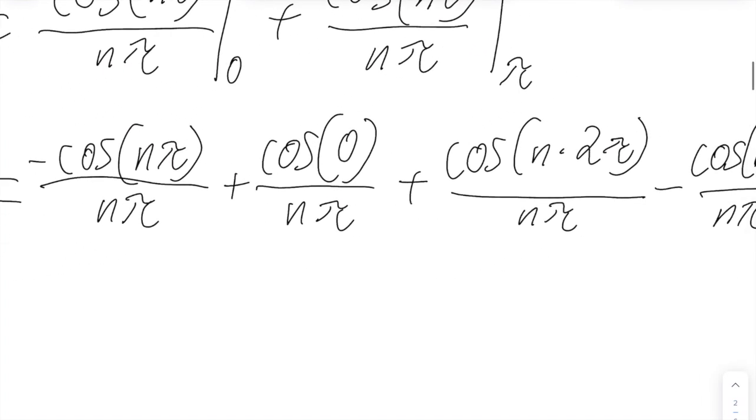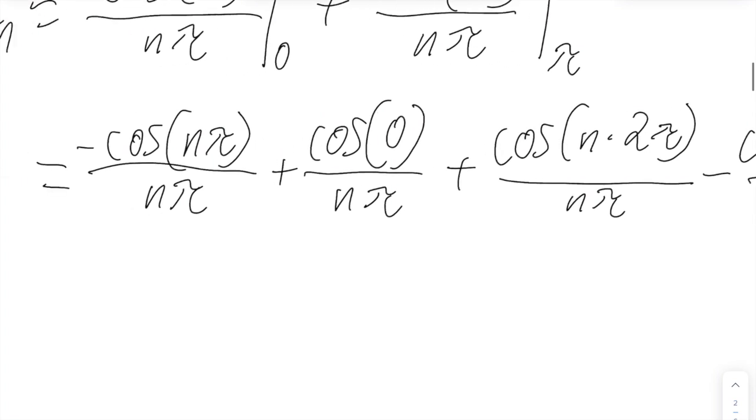All right, so let's start figuring out what these will equal to. So negative cosine of nπ is tricky because the cosine of an even multiple of π will equal to 1. And the cosine of an odd multiple of π will equal to negative 1. And this flips for the negative cosine.